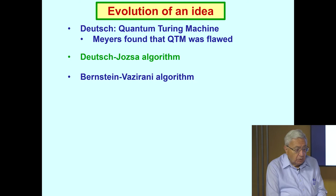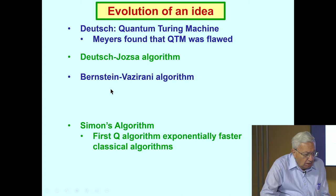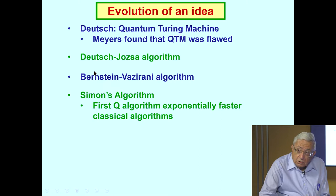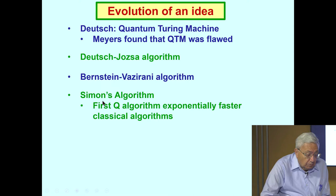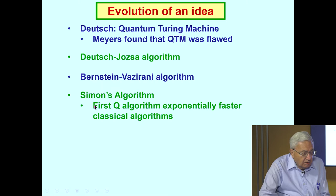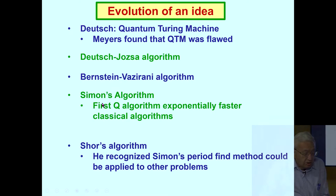Following that, there was a similar algorithm by Bernstein and Vazirani. And then Simon, after studying Jozsa's algorithm, developed a quantum algorithm. He was attempting to prove that quantum computation gave nothing to theory of computation. Instead, he found the first quantum algorithm that was exponentially faster than any possible classical algorithm for the same problem. This is the most amazing result.